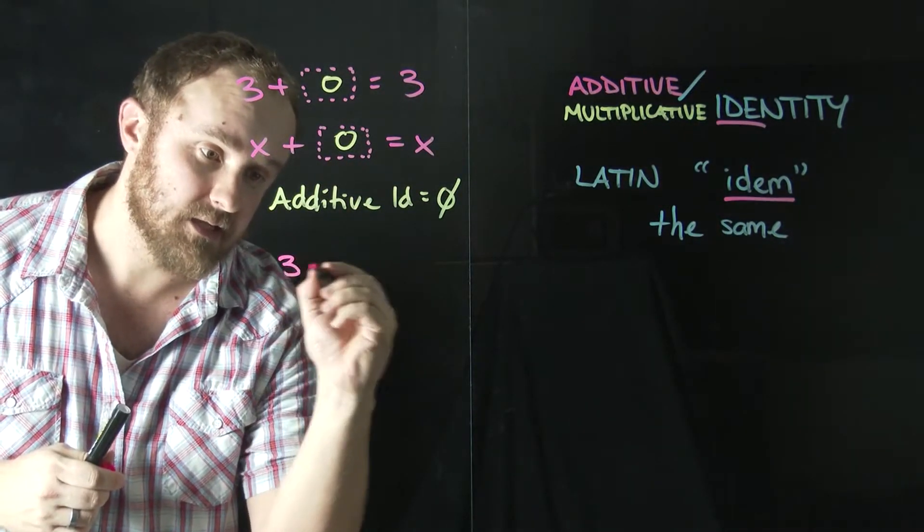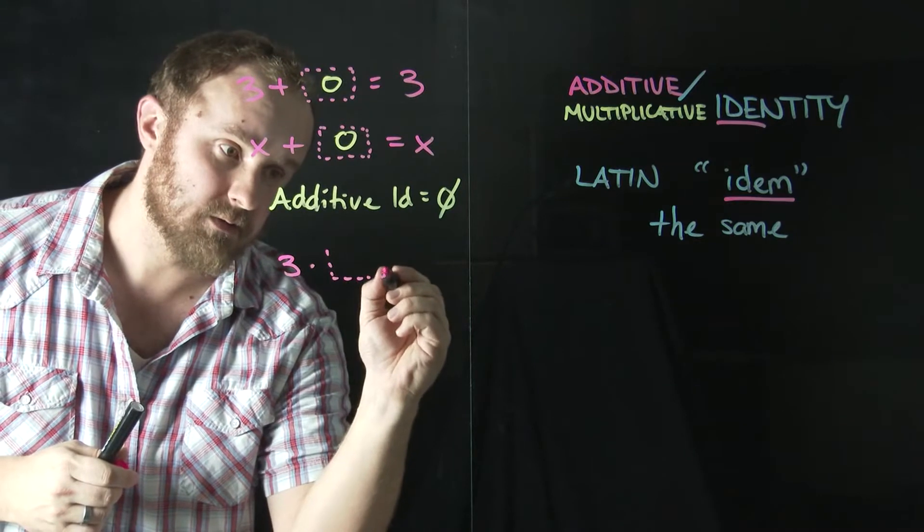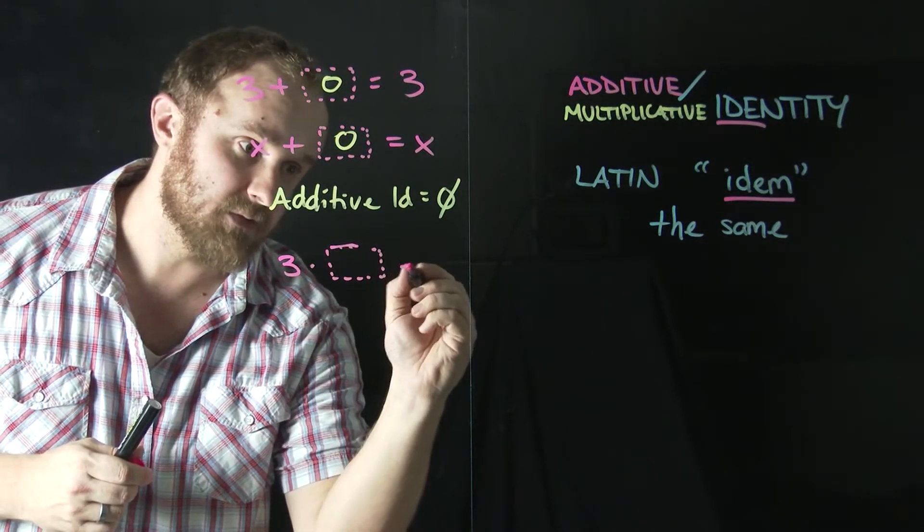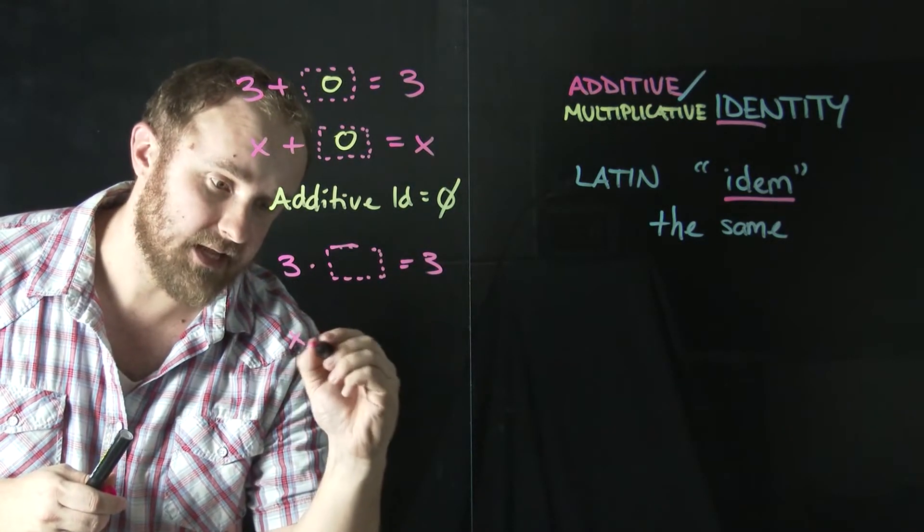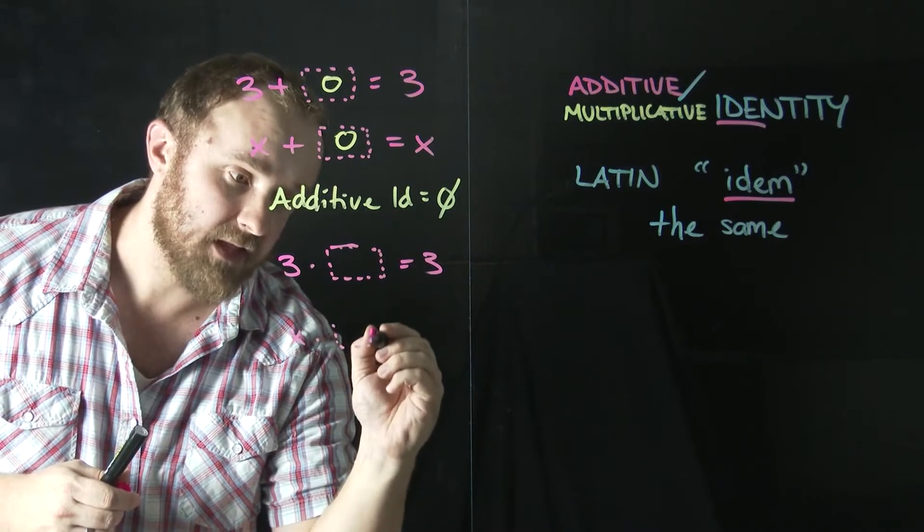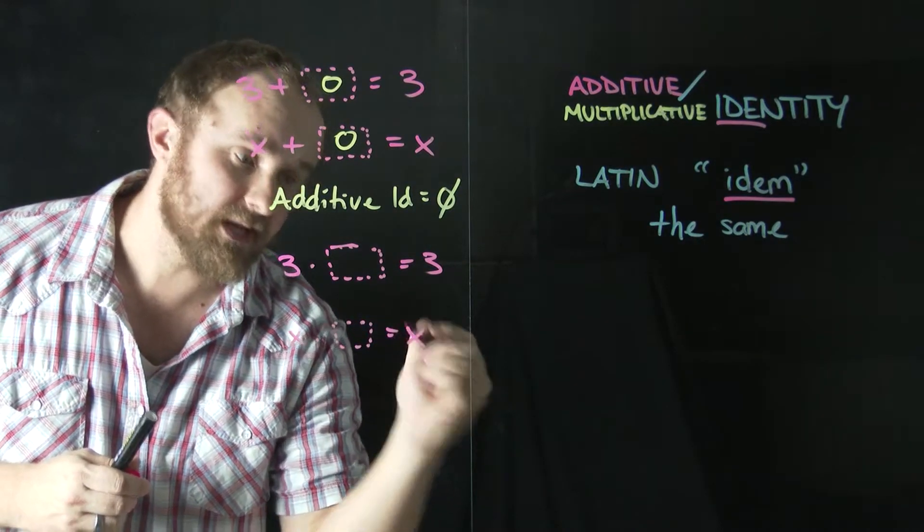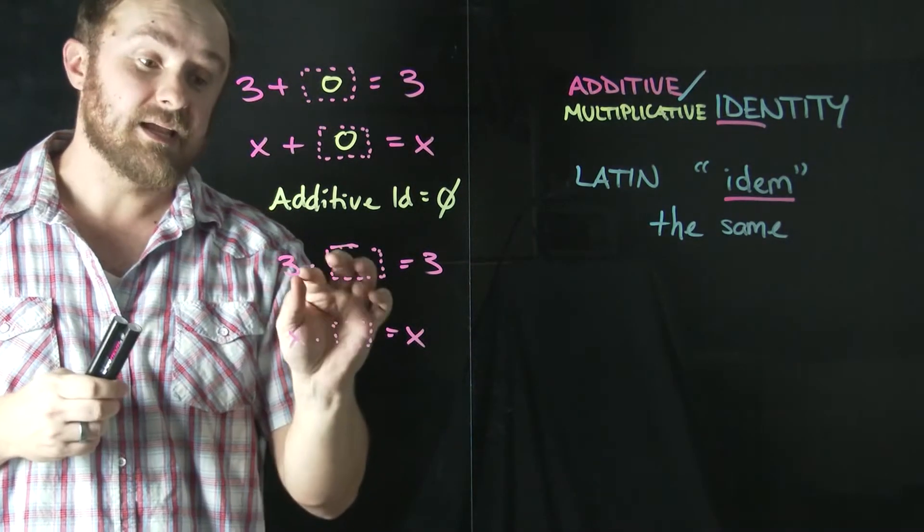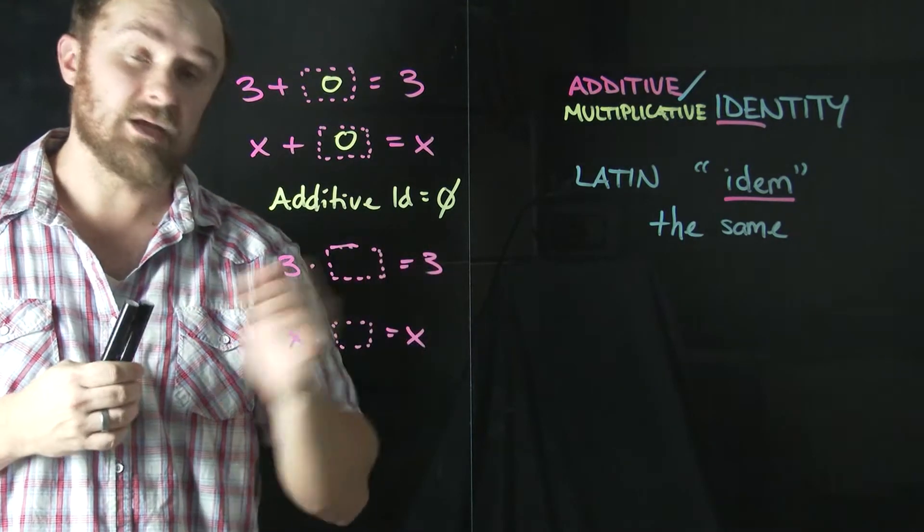So let's look at 3 times a number. And I want that to equal 3. And again, let's look at x as well, x times a number. And I want that to equal x. So what can I put in these boxes when I'm multiplying? That'll make 3 times something equal to 3.